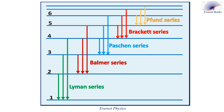This diagram shows three downward transitions for each of the discussed spectral series. Here is the Lyman series with three downward transitions to the N = 1 energy level. Here is the Balmer series with three downward transitions to the N = 2 energy level. And the Paschen series with three downward transitions to the N = 3 energy level.